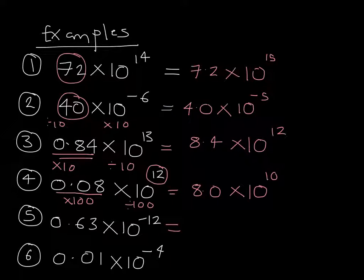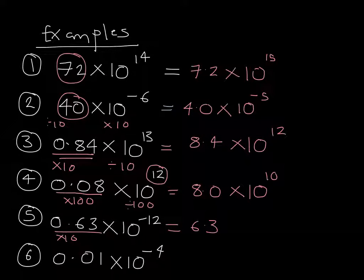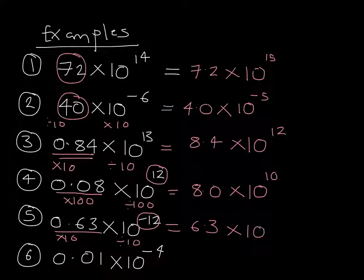Question 5: 0.63 multiplied by 10 to the negative 12. We have to make 0.63 into 6.3 by multiplying by 10, which means that 10 to the negative 12 has to be divided by 10. It's getting smaller, so the power becomes more negative, giving us 10 to the negative 13.